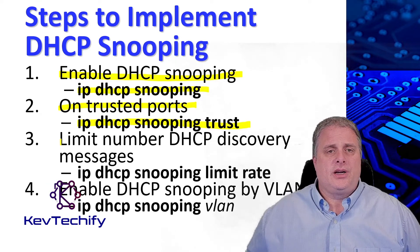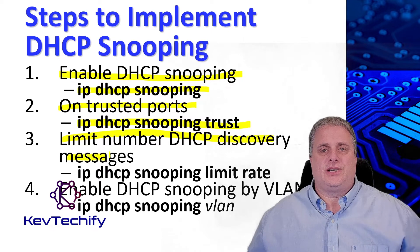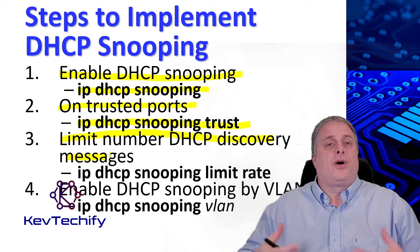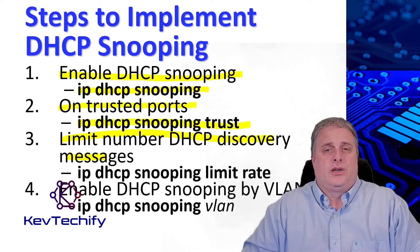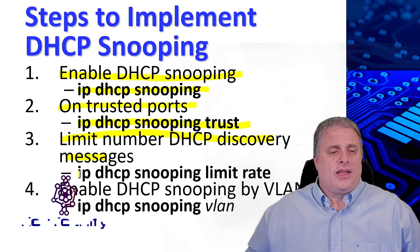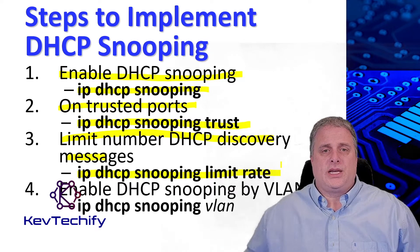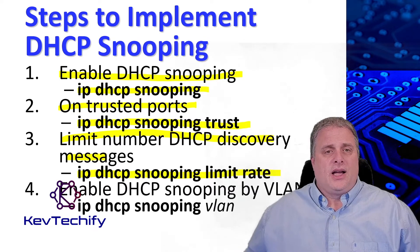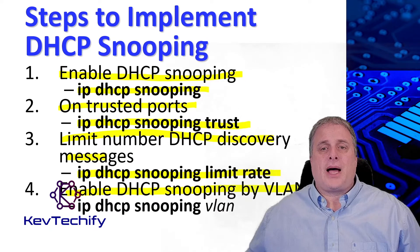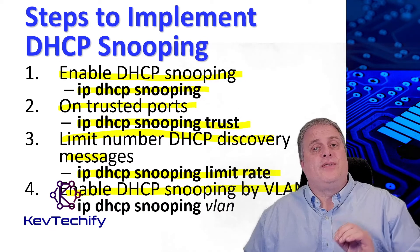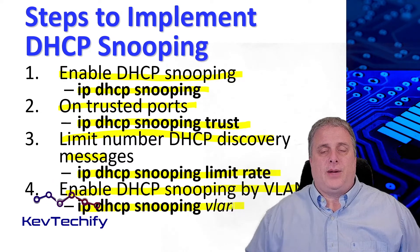Step three is to limit the number of DHCP discovery messages that can be received per second on untrusted ports, using the IP DHCP snooping limit rate command — that limit is per second. The fourth step is to enable DHCP snooping by VLAN or range of VLANs using the IP DHCP snooping VLAN command.